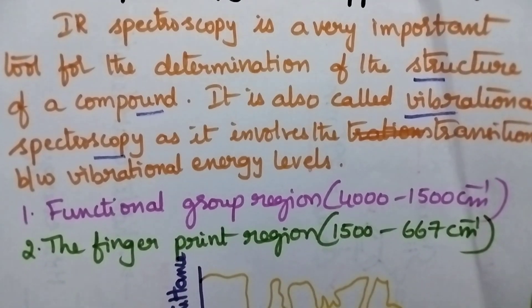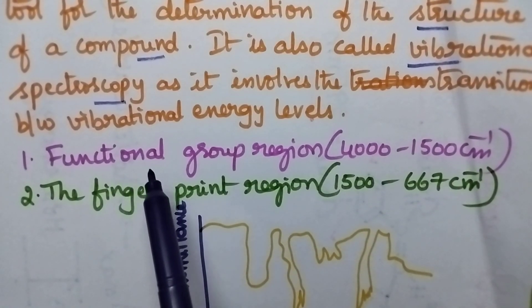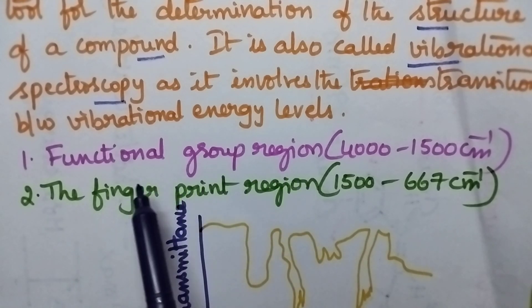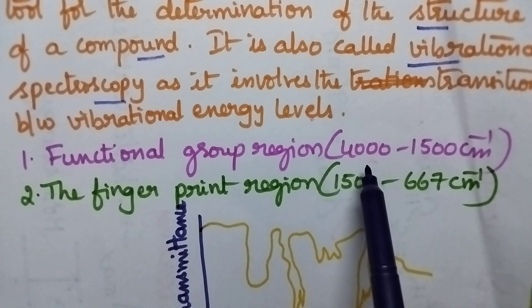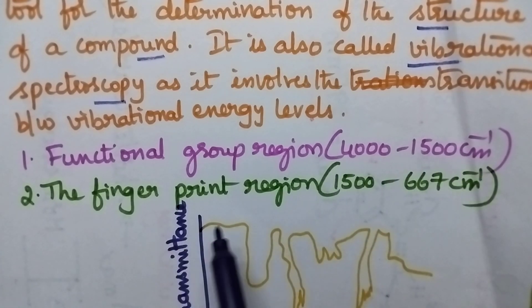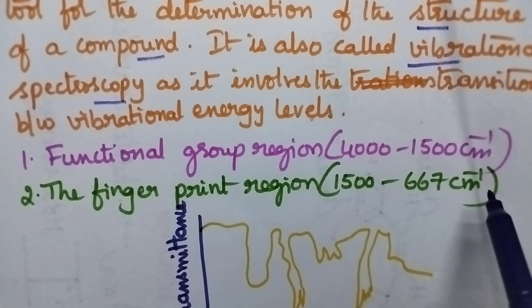There are two important regions in the IR region, one being the functional group region and the other one is the fingerprint region. The functional group region extends from 4000 to 1500 cm inverse, whereas the fingerprint region extends from 1500 to 667 cm inverse.